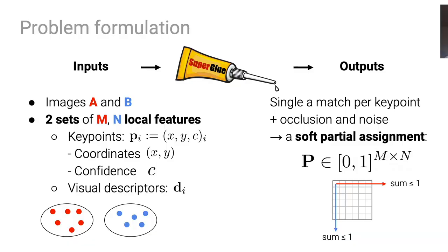Our deep matcher takes as input local features extracted from two images, each composed of keypoint coordinates, confidences, and a visual descriptor. Each keypoint can be matched at most once, and some will be unmatched due to occlusion and failure of the detector, so we seek to output a soft partial assignment matrix.